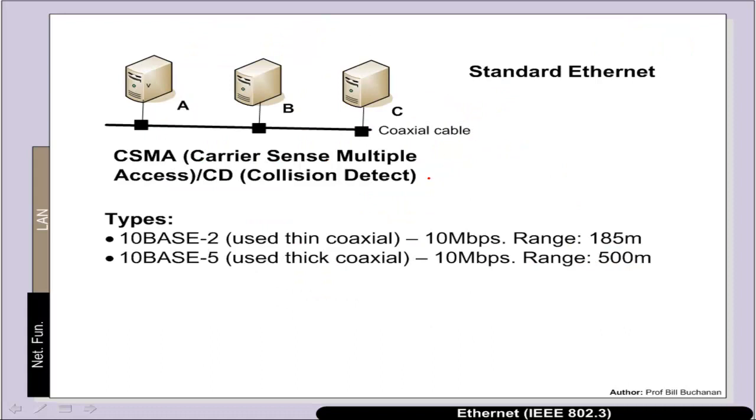Standard Ethernet typically uses two types of cable. We have a thin coaxial cable with 10Base-2, or the thicker coaxial cable with 10Base-5. We get a range of about 185 meters with the thin coaxial, and 500 meters with the thick. Both transmit at 10 megabits per second.